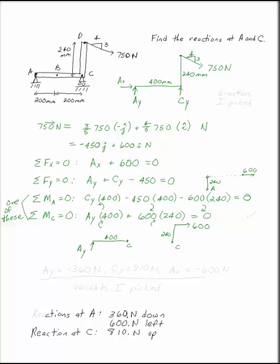If you do the moment at point C, you actually only have, well, you have two terms in your moment equation. It doesn't matter. You get to pick them. Either one will work. In either case, you can find that Ay is negative 360 newtons, Cy is 810 newtons, and Ax is negative 600 newtons.